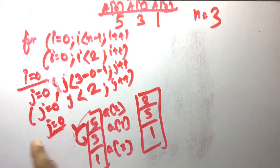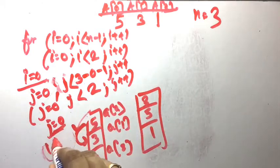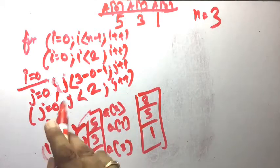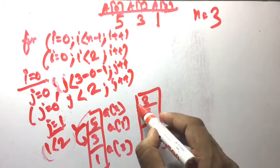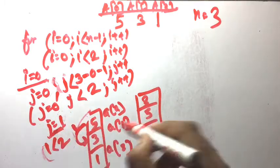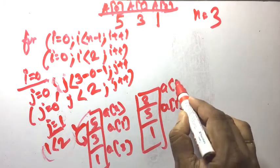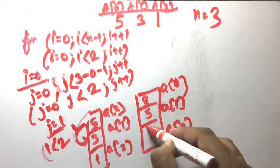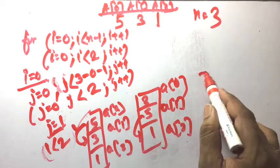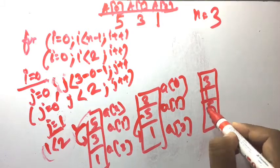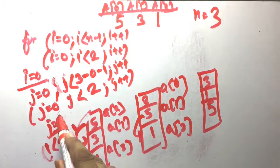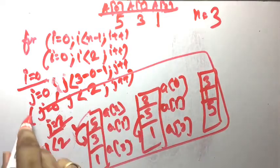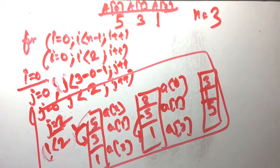Now j is incremented to 1. j equals 1, 1 less than 2, yes. Now a[1] is 5 and a[2] is 1. Since 5 greater than 1, swap is done: result is 3, 1, 5. Now j is 2, 2 less than 2 is false, so the loop ends. The first pass is over. After the first pass, the array is 3, 1, 5.